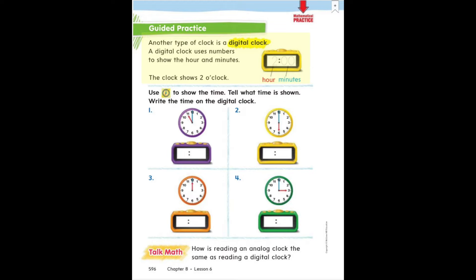On the next page, page 596, it talks a little bit more about that digital clock. Remember earlier this week we talked about analog clocks. It says another type of clock is a digital clock. A digital clock uses numbers to show the hour and the minutes.